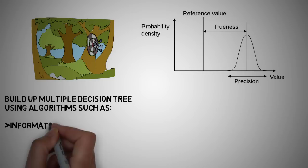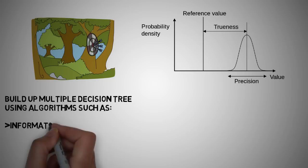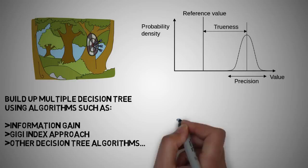To model multiple decision trees to create the forest, you are going to use the same method of constructing the decision with the information gain or Gini index approach, amongst other algorithms.